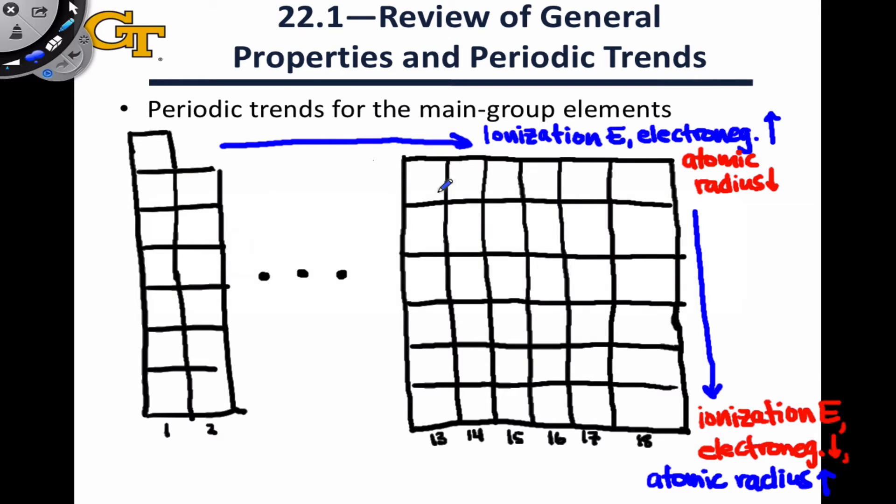Metallic character tends to increase as we move down the periodic table. There's a stair-step progression in the metals, where elements to the left of this green stair-step line I'm drawing are metals, while elements to the right are non-metals. In general, there's essentially no metallic character in the first row of the periodic table. We get more metallic elements as we move further down.